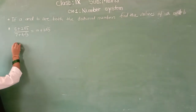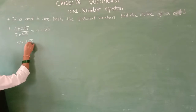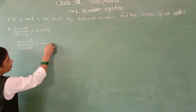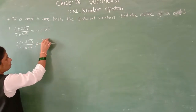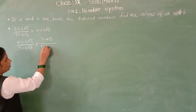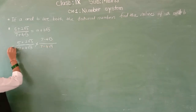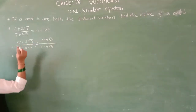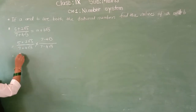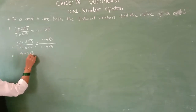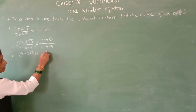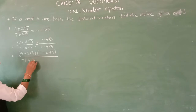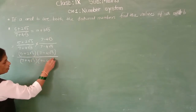Now we can solve this example. So here 5 plus 2 root 3 upon 7 plus 4 root 3 — rationalize this by the factor 7 minus 4 root 3 upon 7 minus 4 root 3. We will simply simplify this side and then compare at the last. So here: multiplication of numerator upon multiplication of denominator. You will get 5 plus 2 root 3 and second bracket 7 minus 4 root 3, upon 7 plus 4 root 3 and 7 minus 4 root 3.